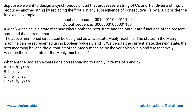This is a TOC question from finite automata. They are saying that suppose we want to design a synchronous circuit that processes a string of zeros and ones, so the input alphabet will be zero and one. Given a string, the automata has to produce another string by replacing the first one in any subsequence of consecutive ones by a zero. If you encounter any subsequence consisting of all ones such as one-one-one, then only the first one will be converted to zero and the rest will stay the same.